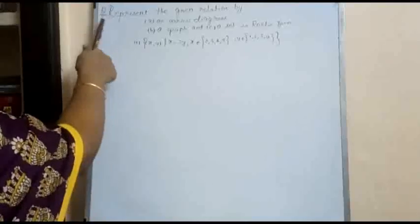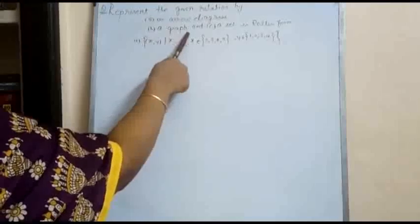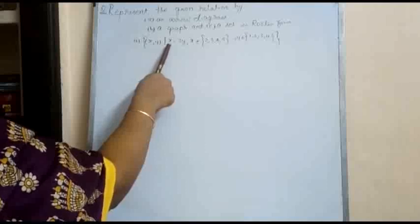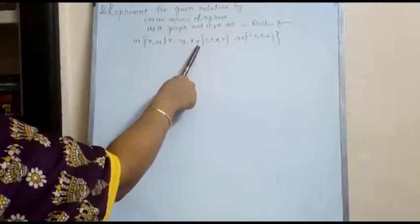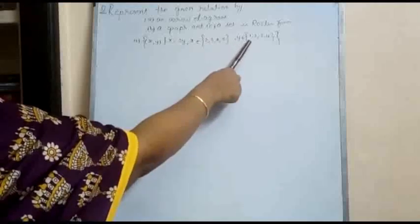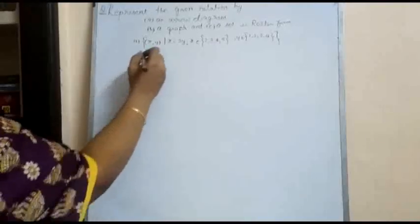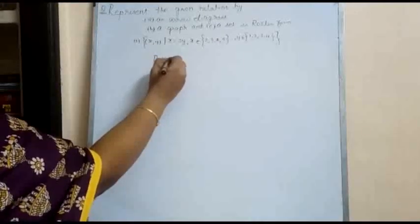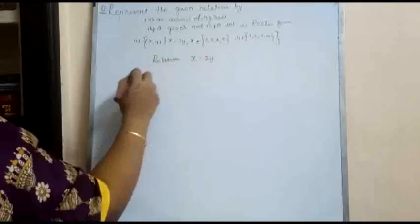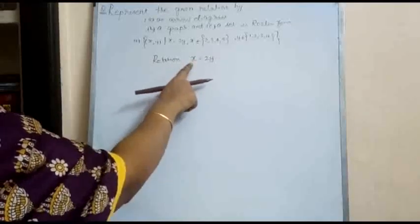Here we have a question: represent the given relation by an arrow diagram, a graph, and a set in roster form. The relation is R = {(x, y) such that x = 2y}, where x belongs to {2, 3, 4, 5} and y belongs to {1, 2, 3, 4}. We have to consider the values of y which satisfy the condition for x.